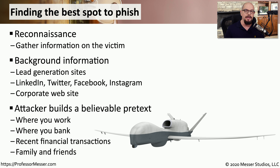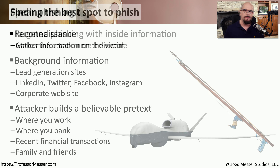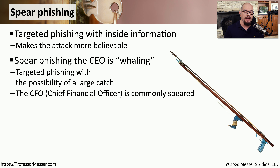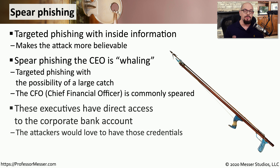They might be able to determine where you live, where you work, who you work with, use people's names, understand places that you shop, and put all of that into a very believable phishing attack. These types of very directed phishing attacks are called spear phishing attacks — they're going after a very specific person or group to gather the information they need. A spear phishing attack that goes after a person with control of a lot of money or information is called whaling. It's very common to go after the CEO or head of accounting because they have access to the entire corporate bank account — all you need is one well-crafted phishing attack to get all the banking information for the organization.